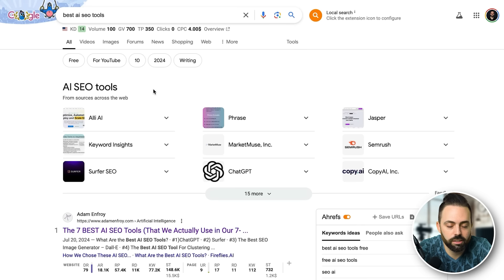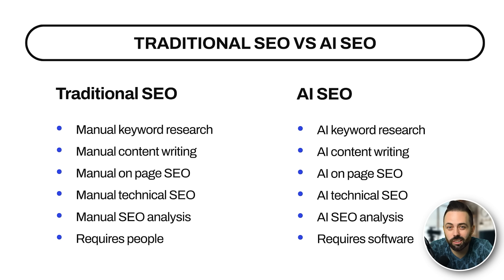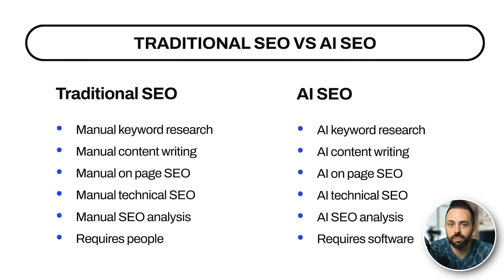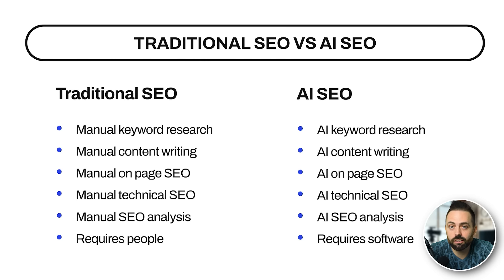In the current landscape we have to talk about traditional SEO versus AI SEO — what's the difference? Traditional SEO is a little more manual: using SEO tools for keyword research, looking at search volume, competition, and difficulty. Then there's manual content writing — when I first started my blog in 2019 I wrote everything myself. Then I outsourced to humans, and there's manual on-page SEO — getting the right headings, formatting, schema markup, and things like that.